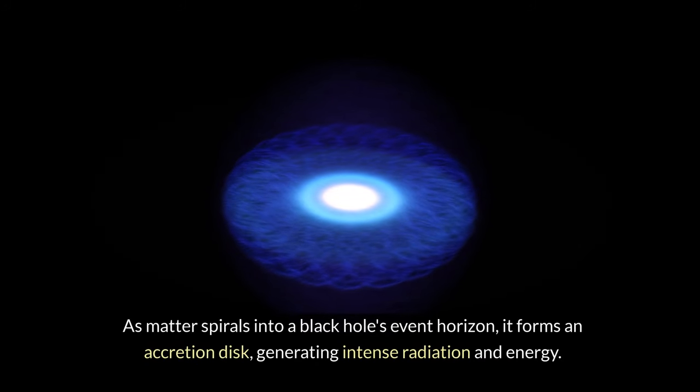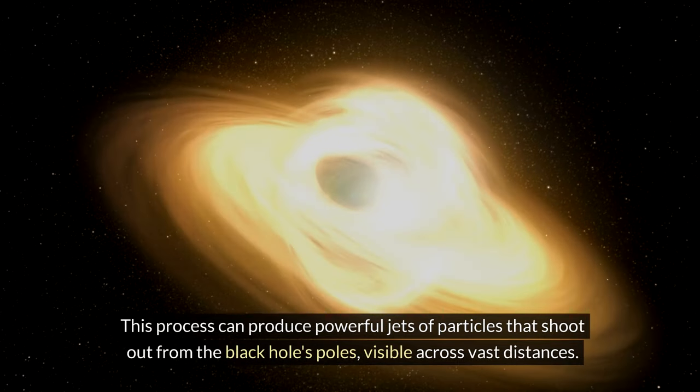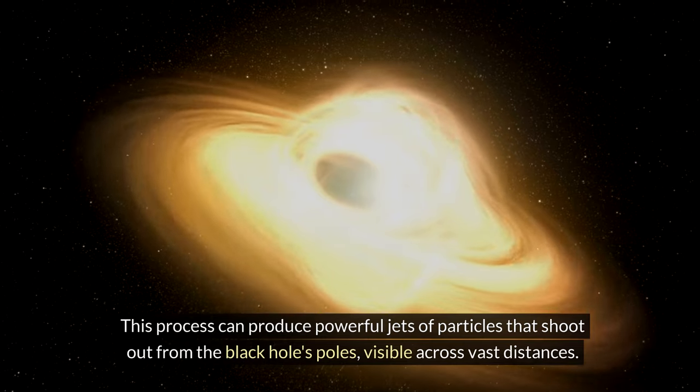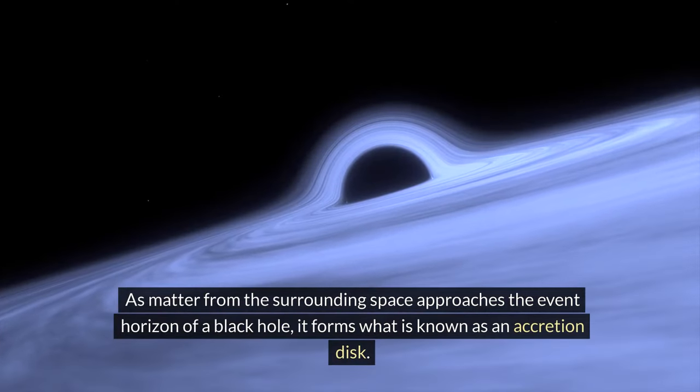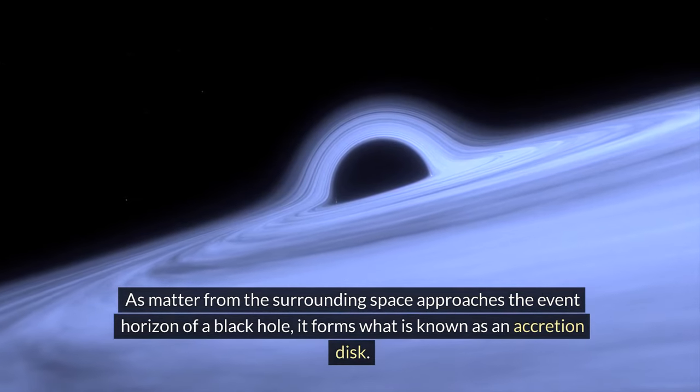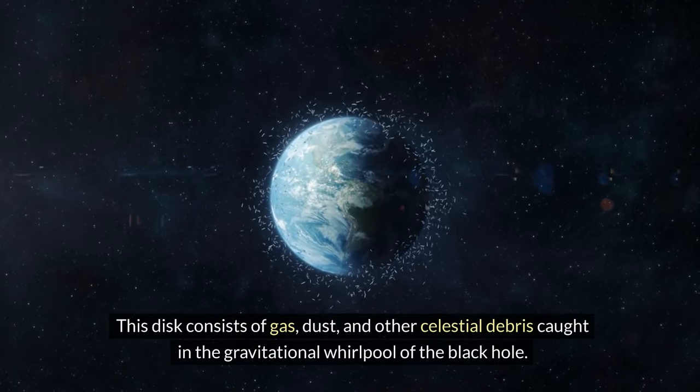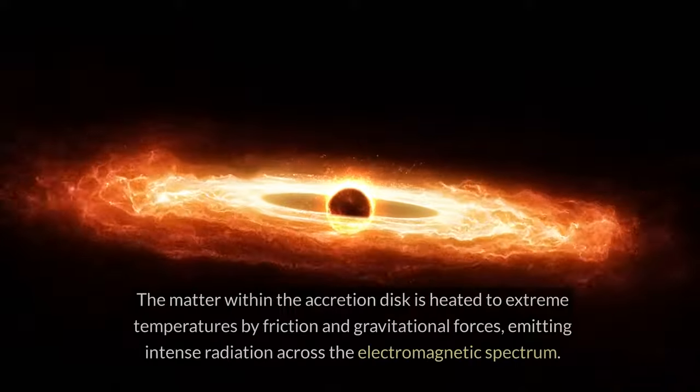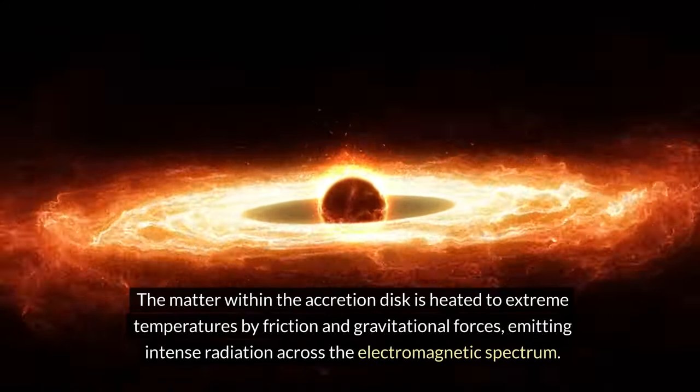As matter spirals into a black hole's event horizon, it forms an accretion disk, generating intense radiation and energy. This process can produce powerful jets of particles that shoot out from the black hole's poles, visible across vast distances. As matter from the surrounding space approaches the event horizon, it forms what is known as an accretion disk. This disk consists of gas, dust, and other celestial debris caught in the gravitational whirlpool of the black hole. The matter within the accretion disk is heated to extreme temperatures by friction and gravitational forces, emitting intense radiation across the electromagnetic spectrum.